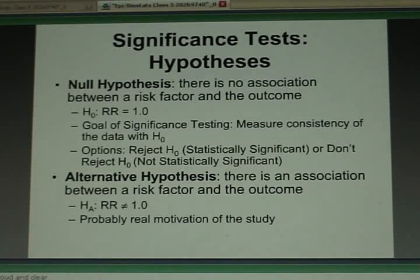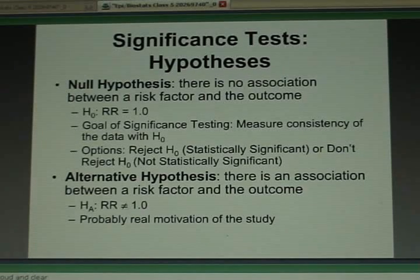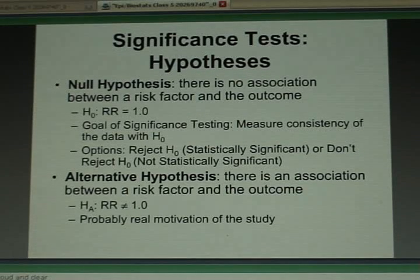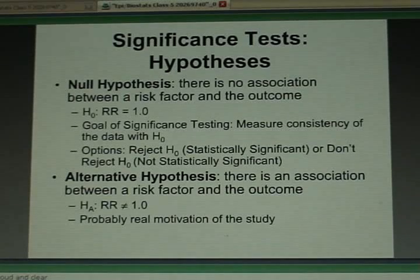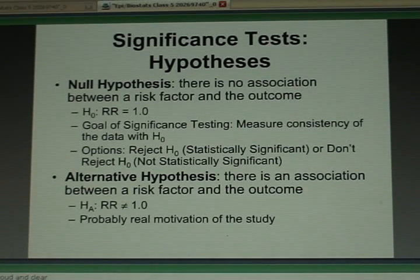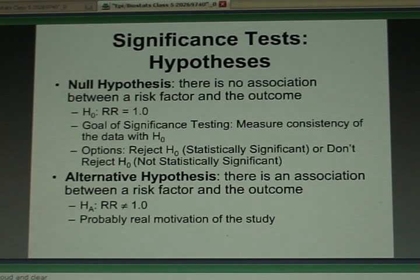Now in your mind, there's this alternative hypothesis. That was the main reason you did this study. The main reason Marjorie was involved in that large randomized trial to see if lifestyle intervention would prevent the development of diabetes is because they thought lifestyle intervention might be useful.